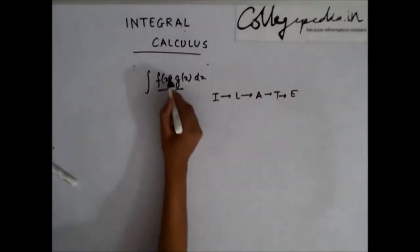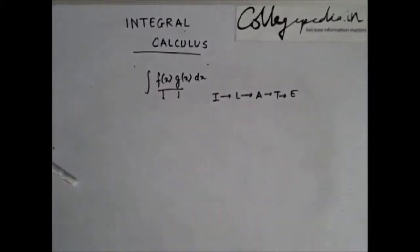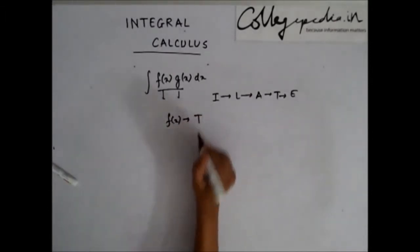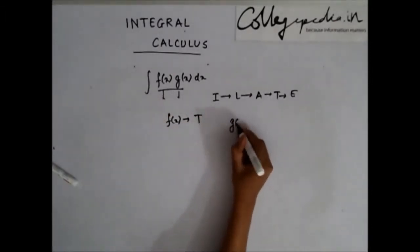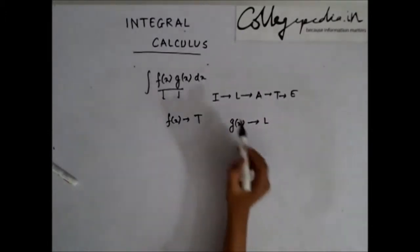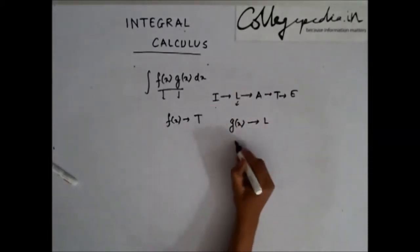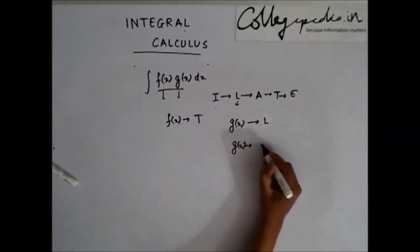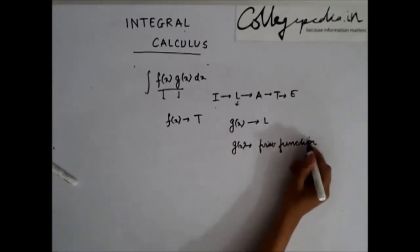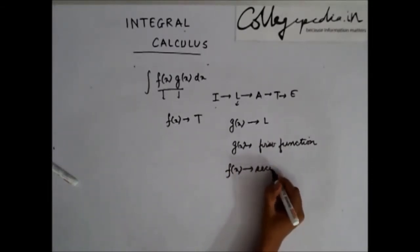Whichever of f or g comes first in this ILATE order becomes the first function. For example, let's say f is a trigonometric function and g is a logarithmic function. Since L (logarithmic functions) comes first in the order, g becomes the first function and f becomes the second function.